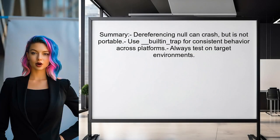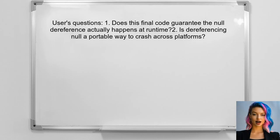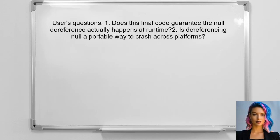In summary, while dereferencing a null pointer can work for crashing in many cases, using __builtin_trap may provide a more consistent and portable solution across different platforms and compilers. The key questions are: does the final code guarantee that the null dereference actually happens at runtime, and is dereferencing null a portable way to crash across platforms? These are important considerations for any developer.